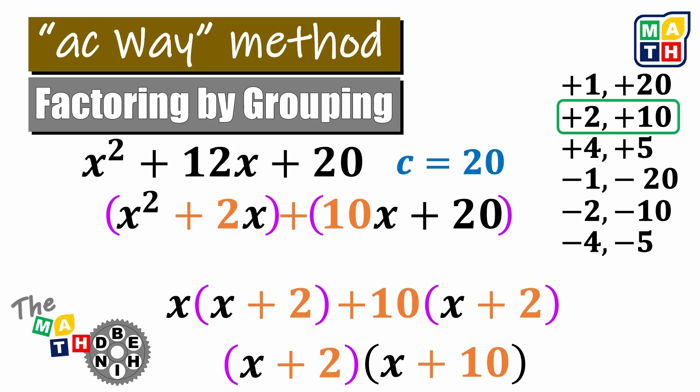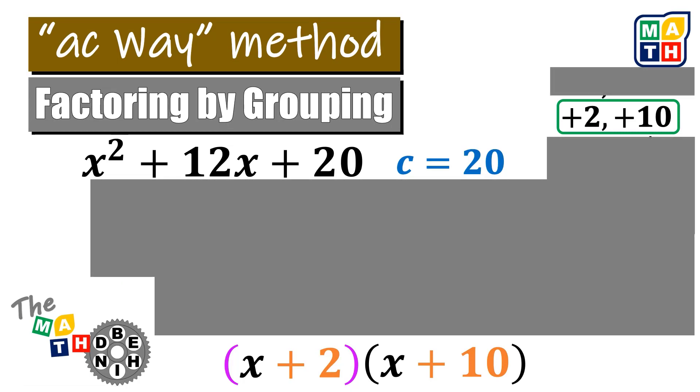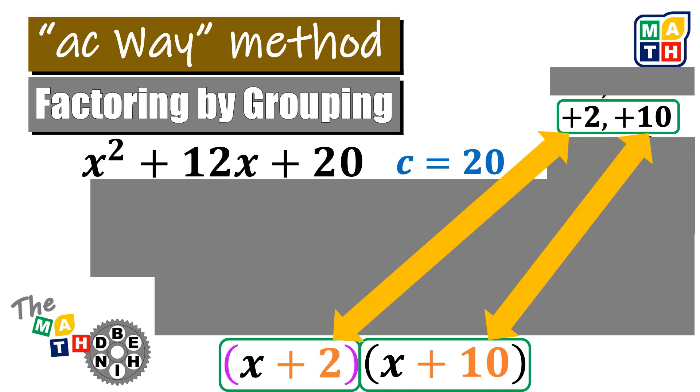Now, if we cover the intermediate steps and look at the results, we can see that the integers identified — which form the basis of the AC-Way method — are the same integers paired to the binomials starting with x. This shows that we are simply finding the factors that multiply to the AC product and sum to the B coefficient, and instead of following the lengthy factoring-by-grouping process, we just place them directly into the expressions starting with x. The AC-Way method is the shorter process of factoring by grouping.